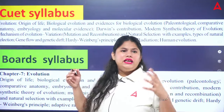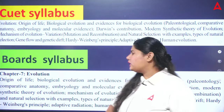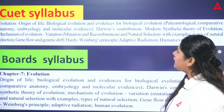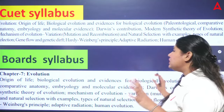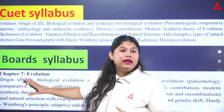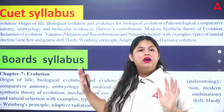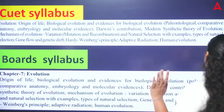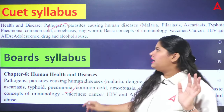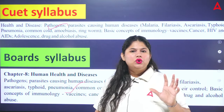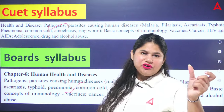Next is Evolution — all the same things are the same in CVT and board. Everything is coming here; every topic is covered. Next is Health and Disease, which is also the same chapter — the list is the same, no change. It will come in both CUT and board.